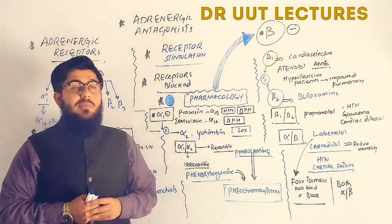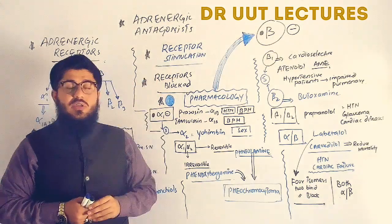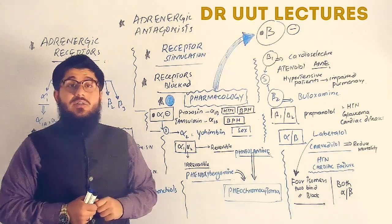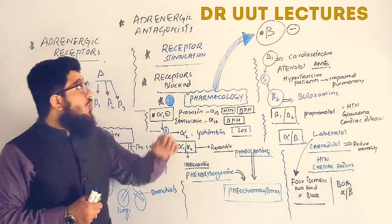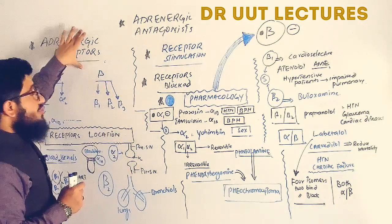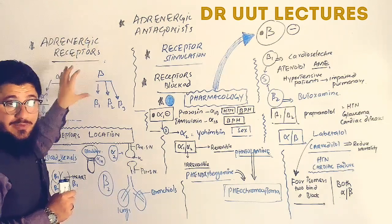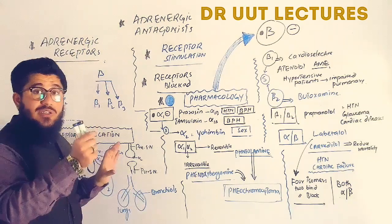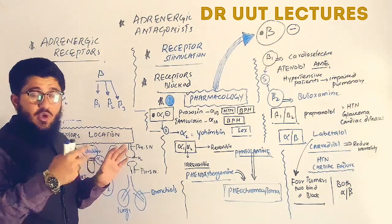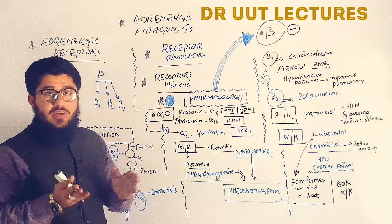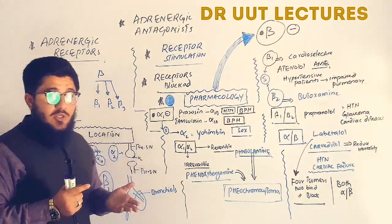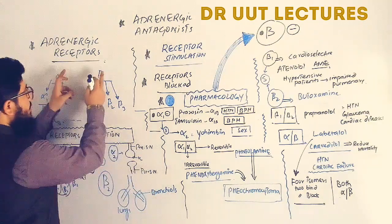In today's lecture we will talk about the adrenergic antagonists, also known as adrenergic receptor blockers or sympatholytics. These are the drugs that will block the adrenergic receptors — the receptors on which adrenaline and noradrenaline will bind and show their action. Epinephrine is adrenaline and norepinephrine is noradrenaline.